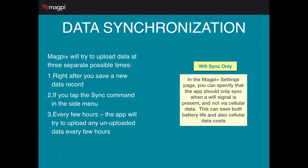Magpie Plus will try to upload data at least three separate times: when you click Save or Save and Add Another as you're adding data into a form; if you go to the side menu and tap the Synchronize or Sync command; and every few hours the app will try to upload any un-uploaded data. Note that in the Settings page, you can specify that Magpie Plus should do all of these things only when a Wi-Fi signal is present and not via cellular data, which can save both your battery life and cellular data costs. You're also certainly able to upload data via cellular if you don't make that selection in Settings.